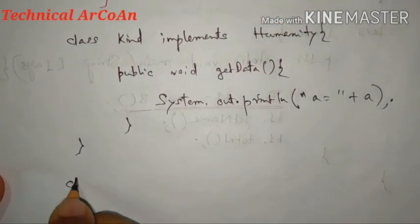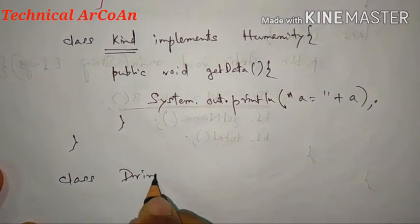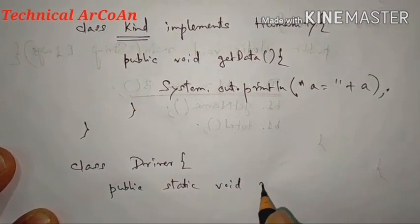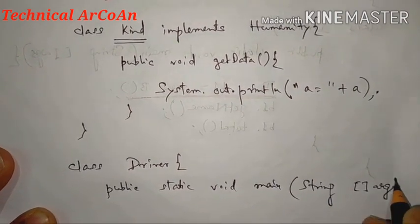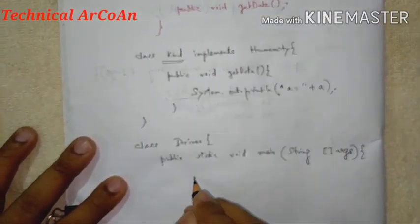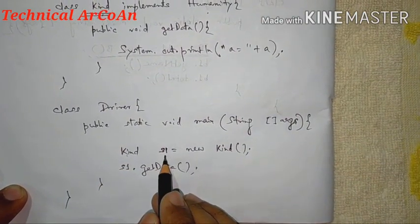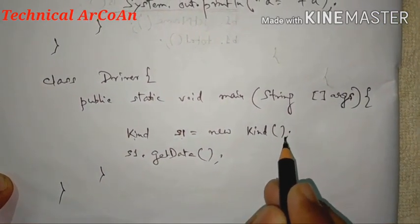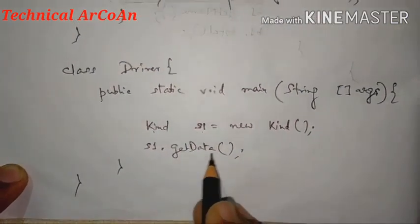There is a driver class which will instantiate the object of the class Kind. The class name is 'Driver', and we need a main method: public static void main(String[] args). We create an object: Kind s1 = new Kind(); and then call the method with s1.getData().